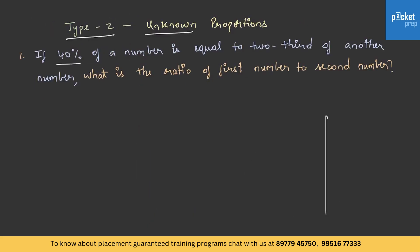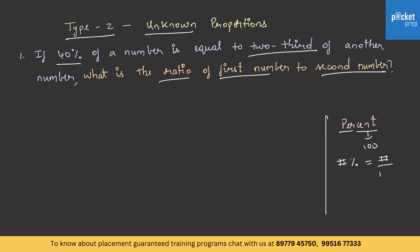If 40 percent of a number is equal to two-third of another number, what is the ratio of the first number to the second number? Before solving, let us understand what percent means. Percent means per 100. To convert a percentage to a fraction, write that number over 100. For example, 25 percent is 25 by 100, 50 percent is 50 by 100, and so on.